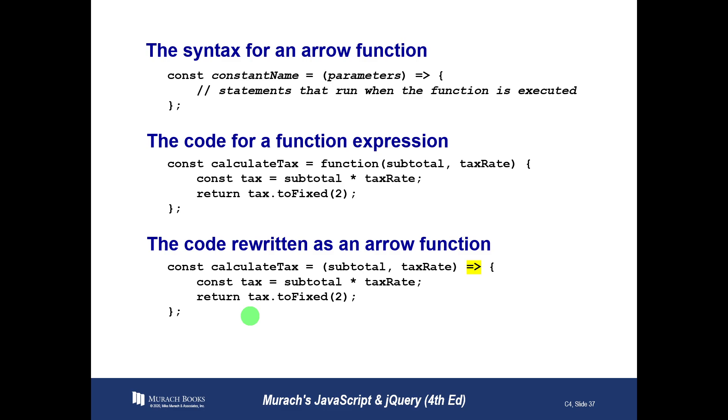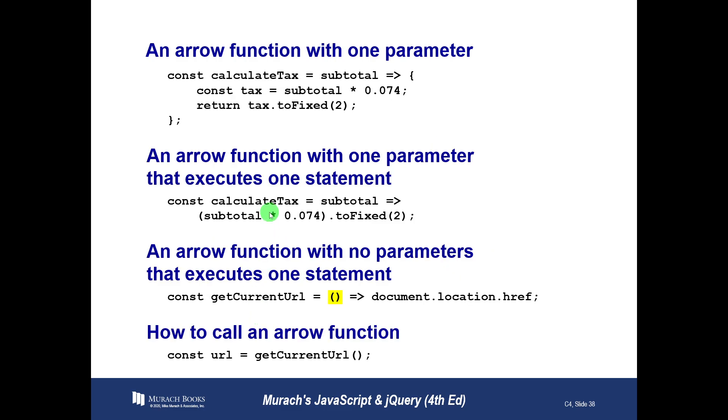Easier to read, quicker, more concise. Let's look at some more examples. Here's an arrow function with one parameter. We have a constant called calculate tax, and this one just takes a subtotal. It only takes one parameter.